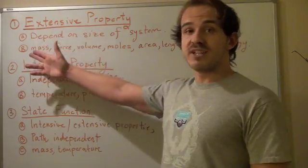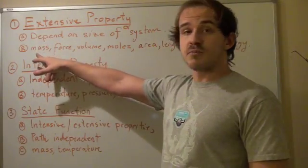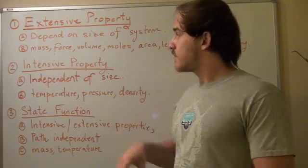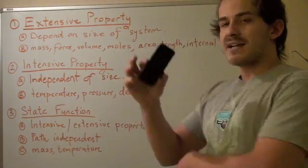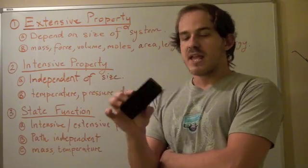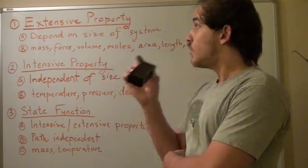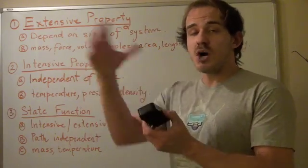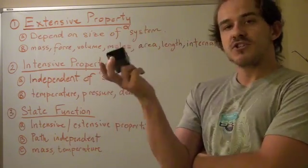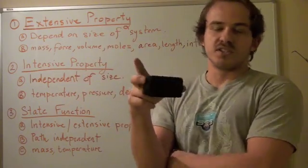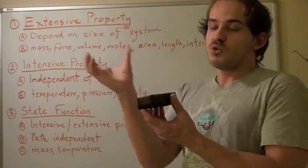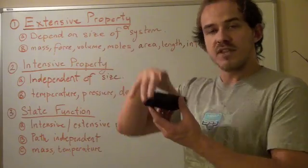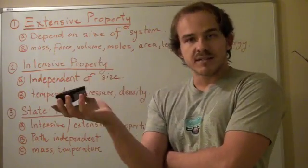So let's go through the examples. Extensive properties, let's talk about mass. So this eraser has a certain mass. And what happens to the mass if you double the size of this eraser? Well, the mass would also double. Suppose you add or you stack a second eraser on top of this eraser, what will happen to the mass? It will double.